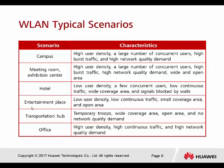Transportation hub: users are only temporary, but it requires a very wide coverage area, open area, and no network quality demand — there's no importance on quality because all guests are there only temporarily. The last scenario is the office: high user density, continuous traffic, and network quality demand.